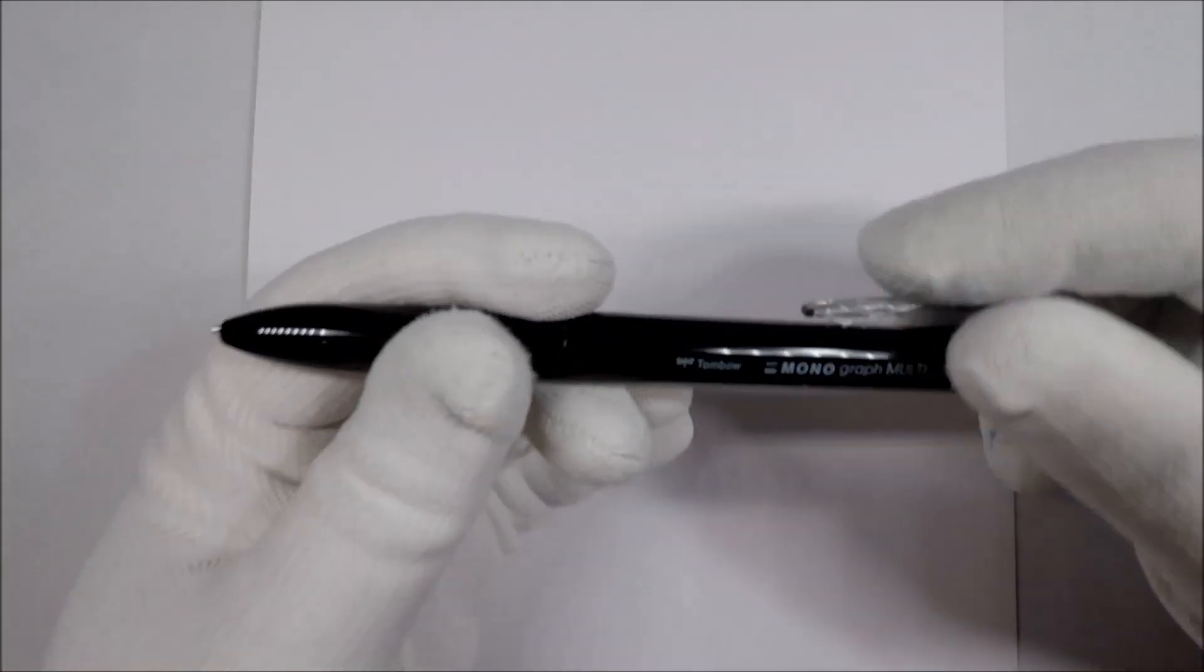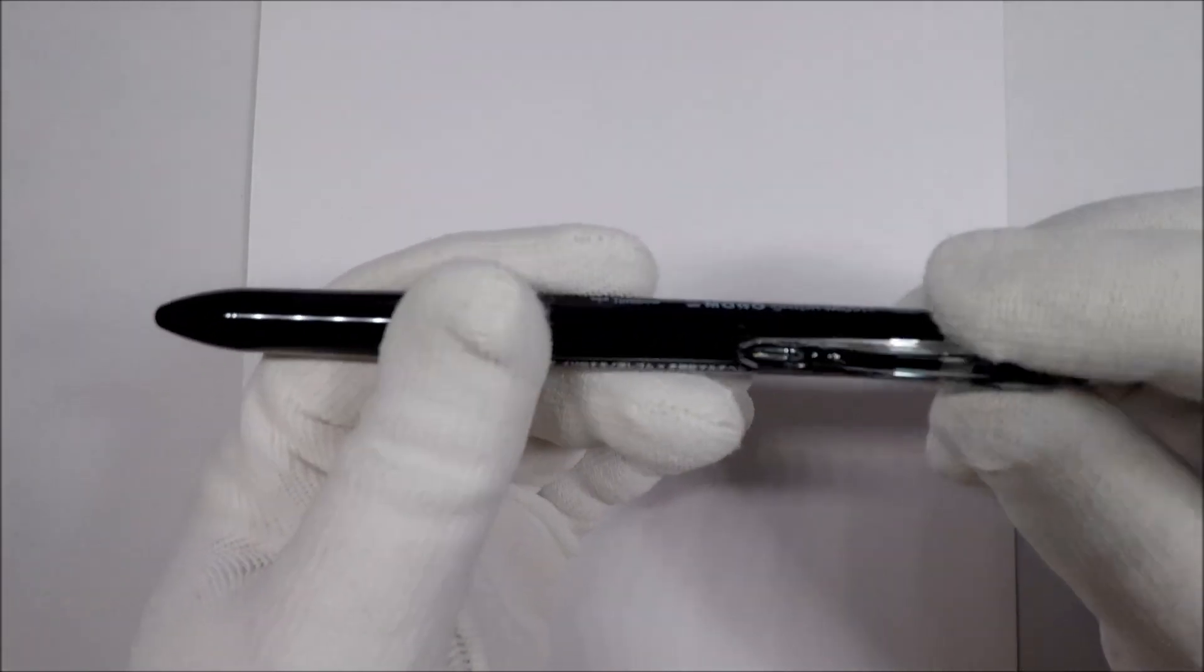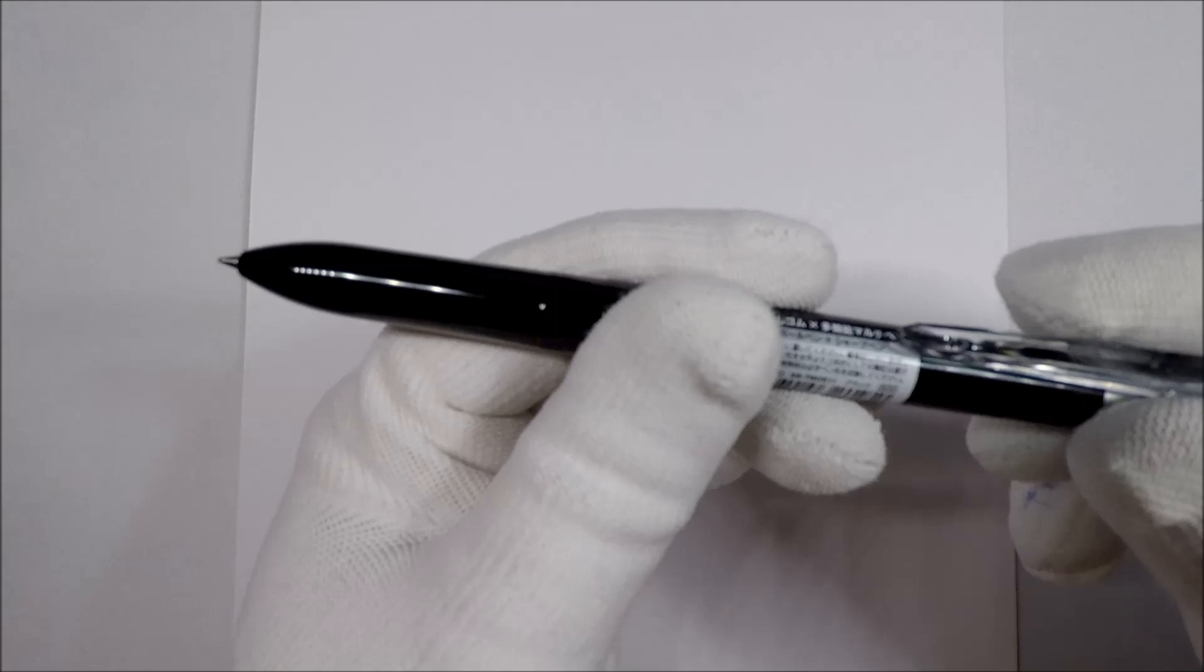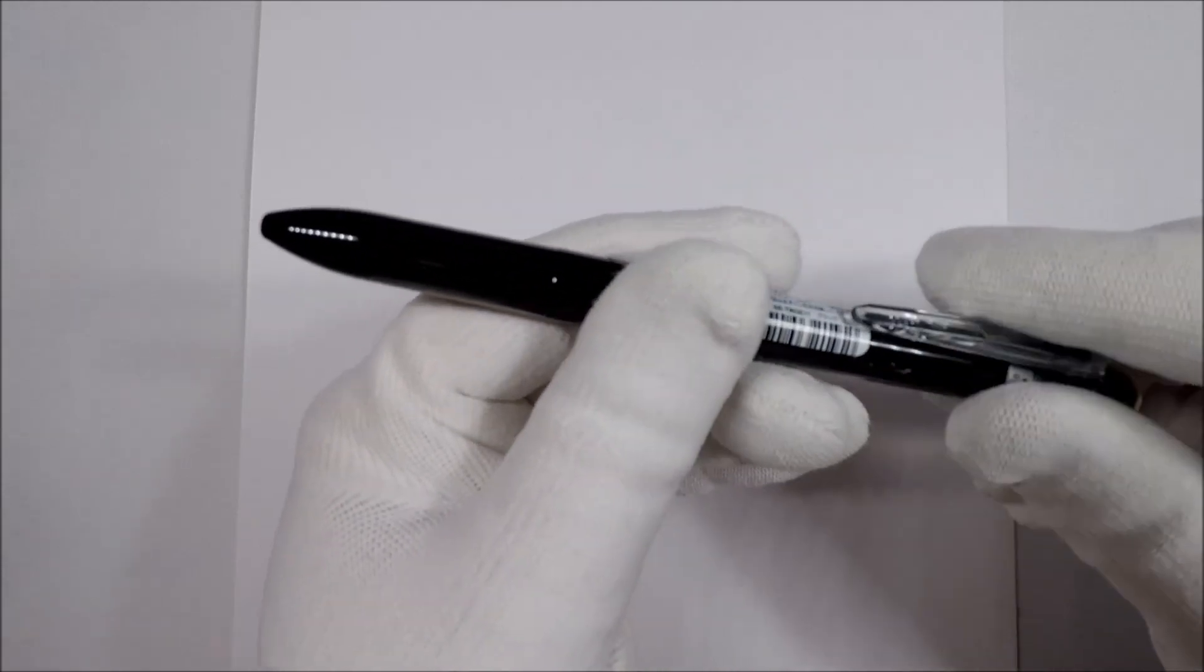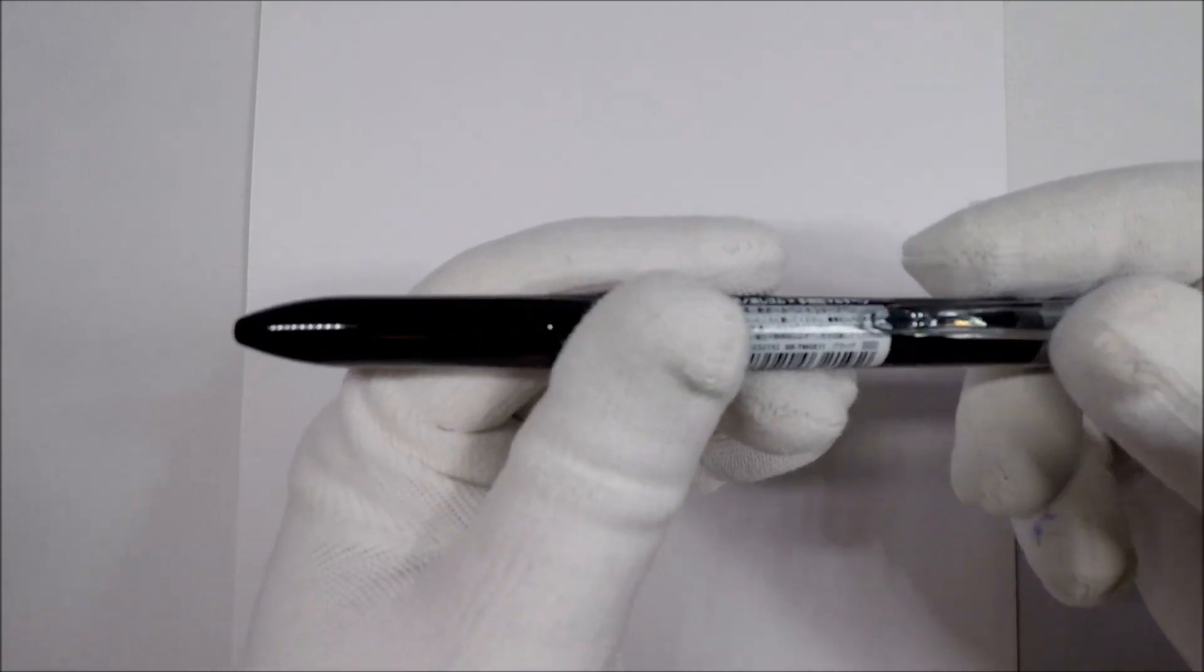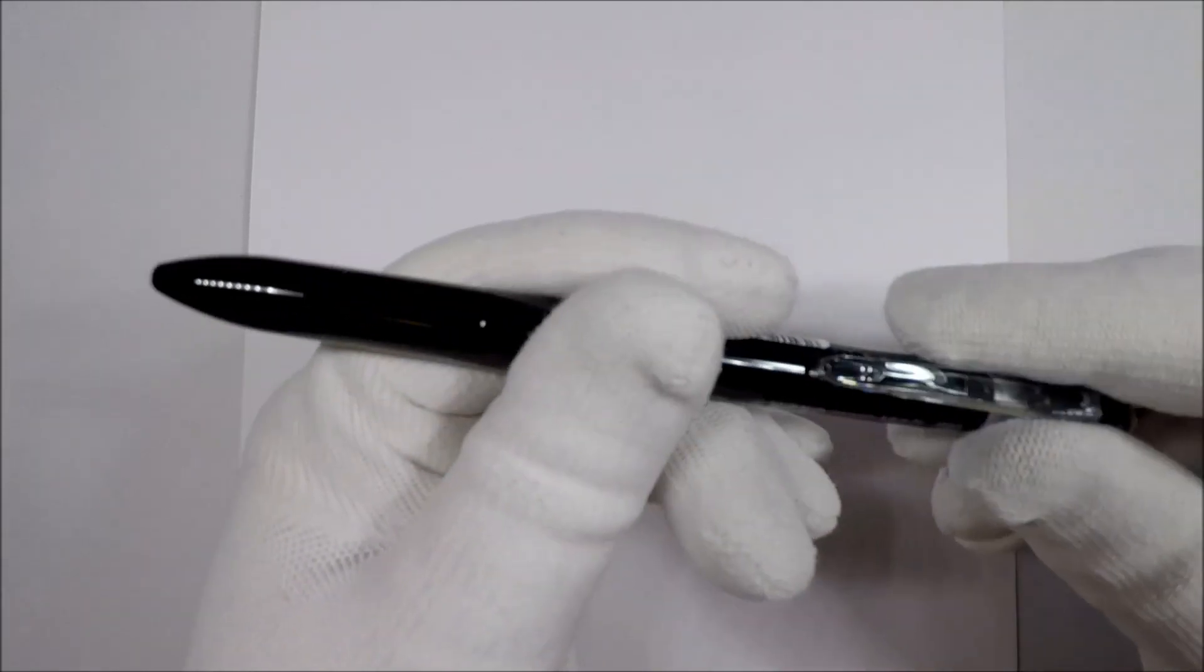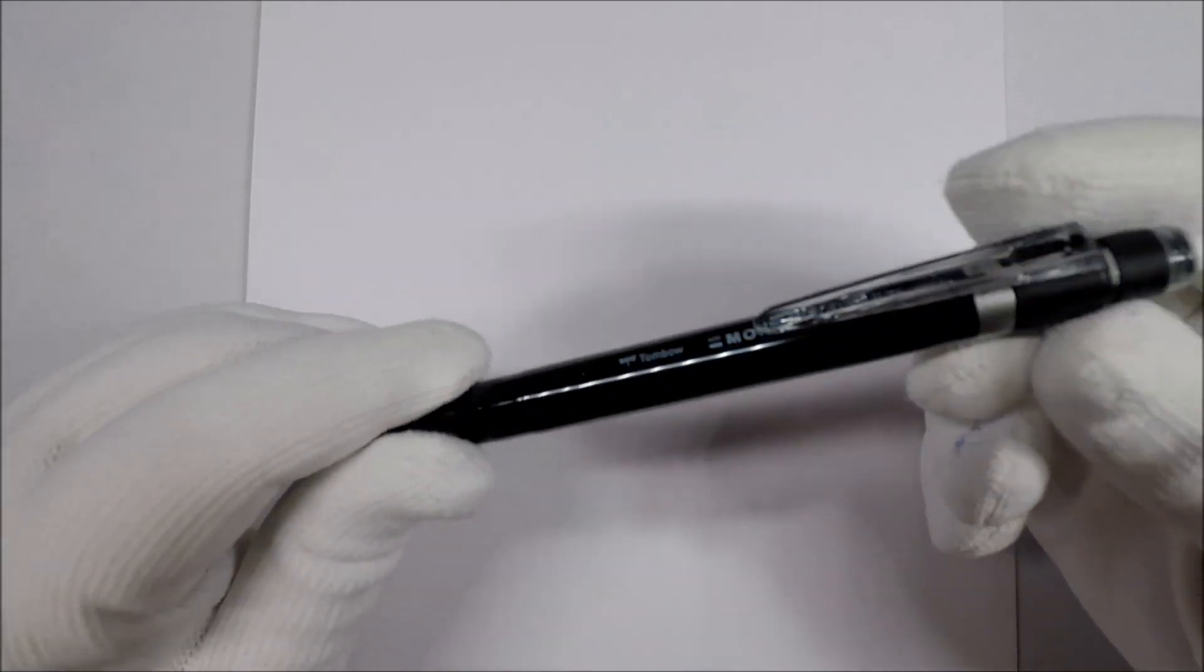So, let's take a look at this thing. This one twists. You twist the cap, and it extends the tip, and then you twist it, and when it's in the middle, nothing is extended. It's an okay mechanism, I guess. Let's try it out and see how it looks.